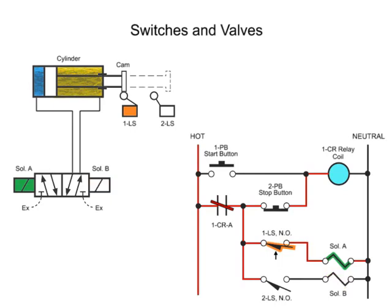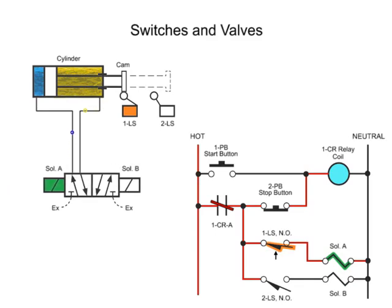Solenoid A operates the hydraulic valve, which shifts to allow fluid to flow and extend the cylinder. As the cylinder extends, the cam releases limit switch 1LS, which in turn de-energizes solenoid A. However, since the valve has no spring returns, it remains in its shifted position when both solenoids are de-energized.